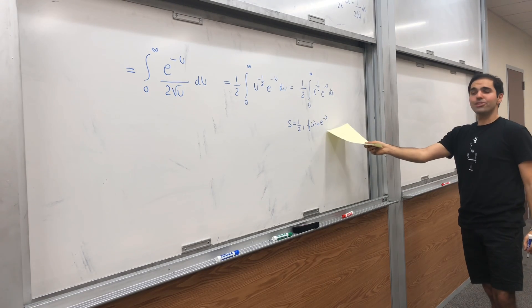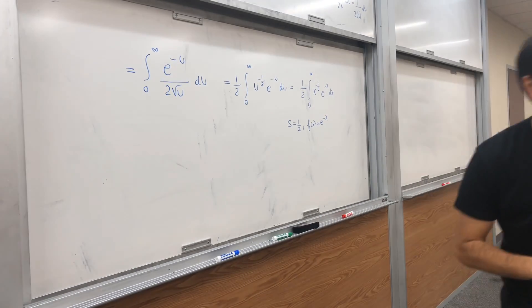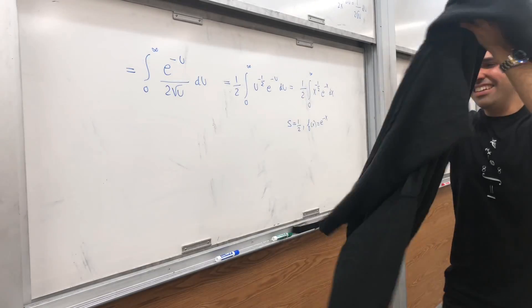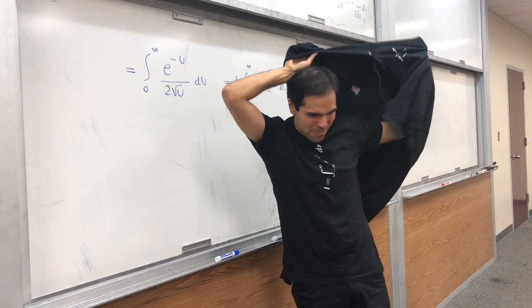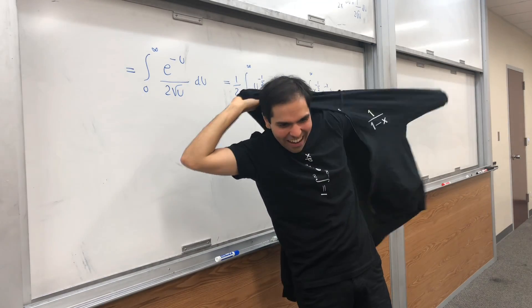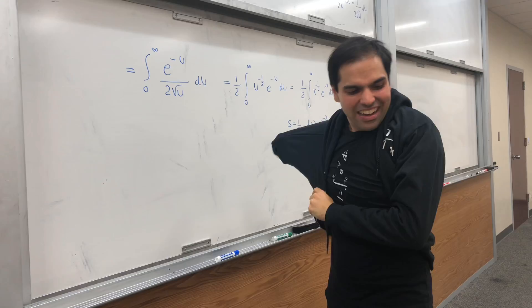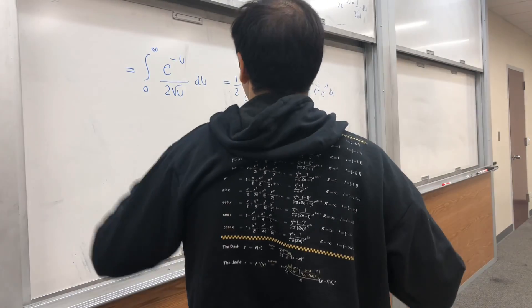Now let's use the power series of e to the minus x. I realize I still have the sweater, so let me put the power series sweater on. It's like the power rangers of math. If only I can find the power series of e to the minus x. Well, ta-da! It's somewhere on there.